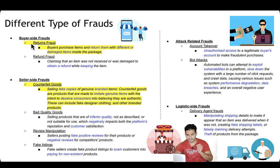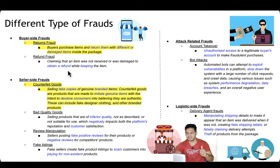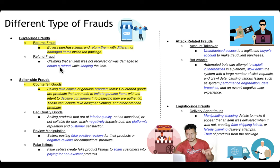There are buyer-side frauds. The first is return fraud, where a buyer purchases items and returns them with different or damaged items inside the package. In refund fraud, the buyer may claim an item was not received or was damaged to obtain a refund while actually keeping the item. So in return fraud they return a damaged or different item, while in refund fraud they keep the item and still get a refund.